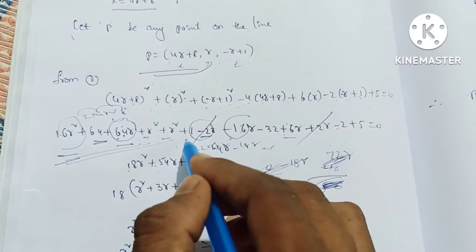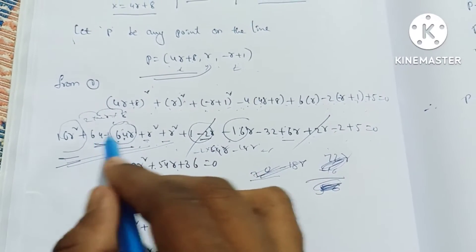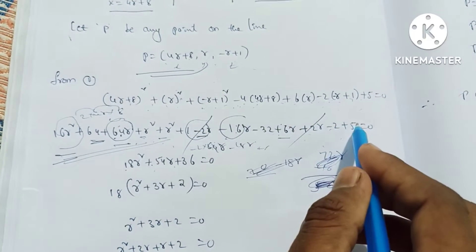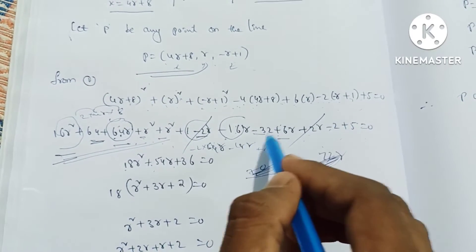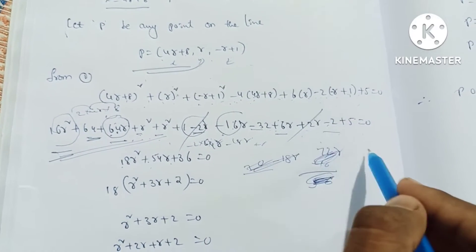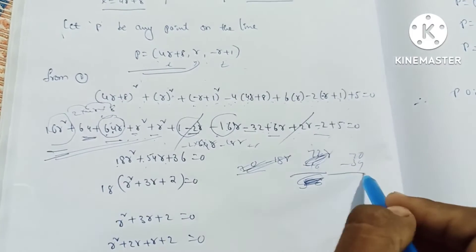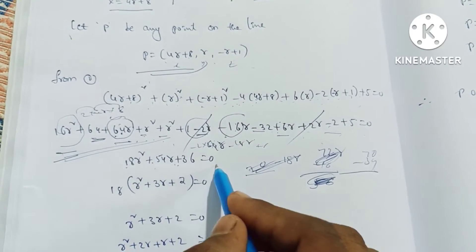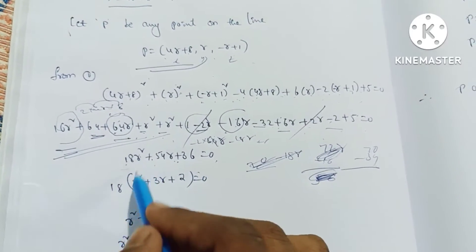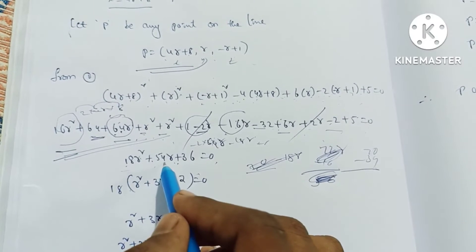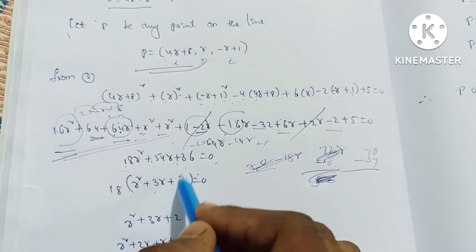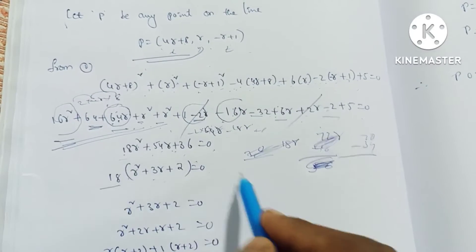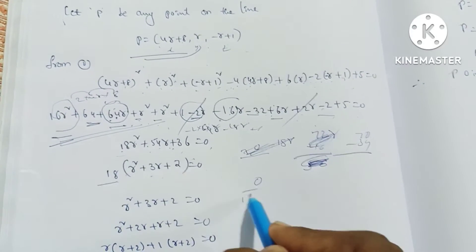Minus 2 into plus 1 is minus 2, plus 5 is equal to 0. Combining: 16r squared and 2r squared gives 18r squared. Minus 2r cancel. Minus 64r plus 6r into 70r, minus 17r into 16r is 54r. Minus 64r plus 65r is 70. Minus 32 minus 2. Minus 70 minus 34r, minus 36r is equal to 0. Dividing by minus 18, r squared minus 18r is 54r, minus 3r plus 2 is equal to 0. Multiply by minus 1: r squared plus 3r plus 2 is equal to 0.